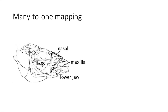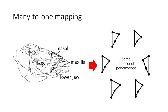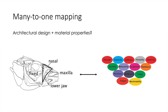I want to start talking about many-to-one mapping, which is a concept that tells us that different configurations of the same morphological traits can result in the same functional performance. This is a concept quite well known for people that work with morphology, but something we don't know so well yet is if we can get the same level of functional performance through different combinations of architectural design and the material properties of these morphological traits, like strength, elasticity, or stiffness.